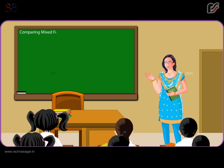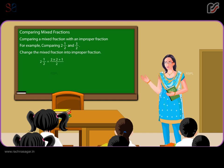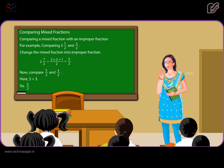Comparing mixed fractions. To compare a mixed fraction with an improper fraction, for example comparing 2 and 1 by 2 with 3 by 2: change the mixed fraction into an improper fraction. 2 and 1 by 2 equals 2 multiplied by 2 plus 1, whole divided by 2, which equals 5 by 2. Now compare 5 by 2 and 3 by 2. Since 5 is greater than 3, 5 by 2 is greater than 3 by 2, or 2 and 1 by 2 is greater than 3 by 2.